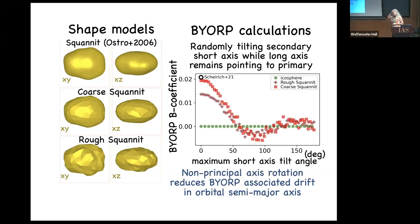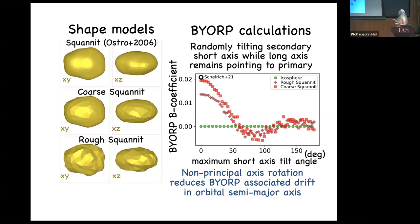Using the Squannit shape model with various roughness perturbations: once you have a shape model, you have little facets all over the body and you can compute the radiation force. The BYORP B coefficient — which tells you the torque — drops as a function of short-axis tilt angle. Once you get to about 50 or 60 degrees, it drops to zero. Other people had calculated the BYORP torque on this shape model, and our red dot matches their black dot — confirmation. A sphere gives you zero — two checks on the code.